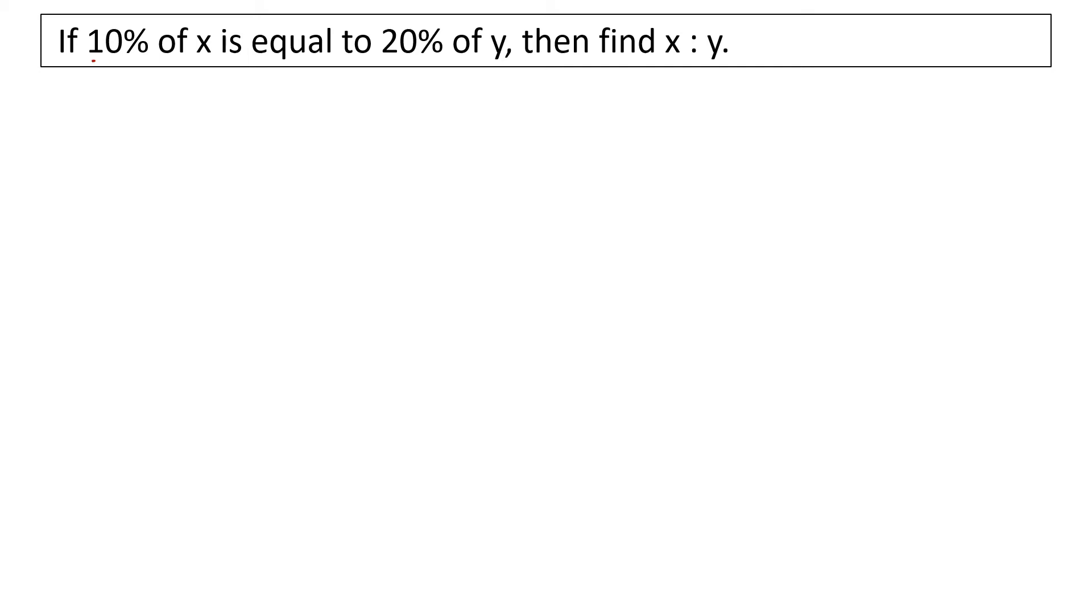If 10% of x is equal to 20% of y, then find x is to y. 10% of x is x into 10 by 100, and 10% of x is equal to 20% of y, so y is 20%, y into 20 by 100.